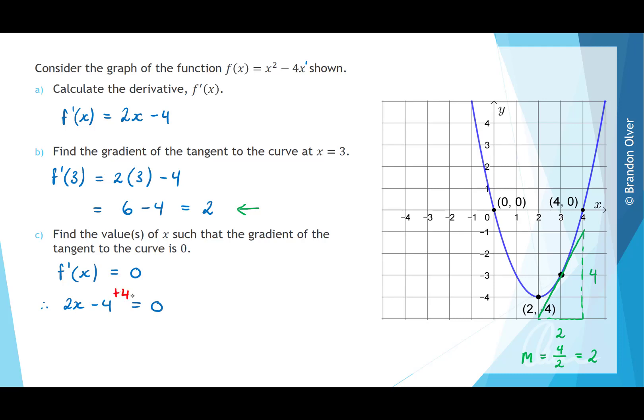And next we can add 4 to both sides of the equation. Therefore, 2x is equal to 4, and if we divide both sides by 2 that will give us x is equal to 2. So that is the value of x such that the gradient of the tangent to the curve is 0.